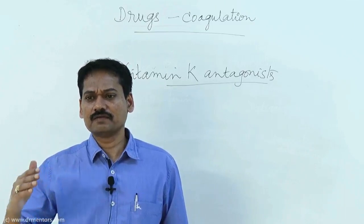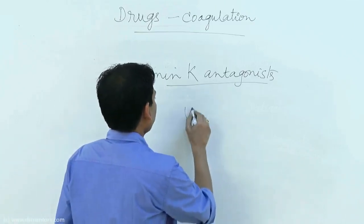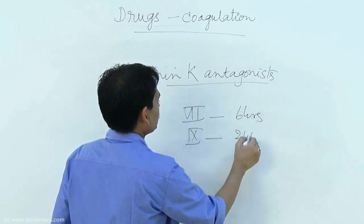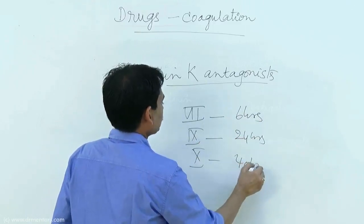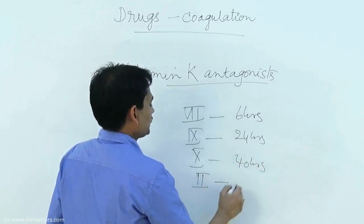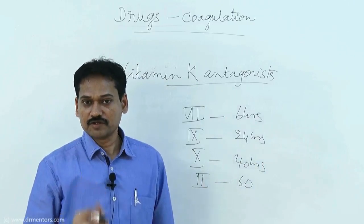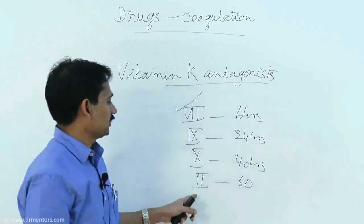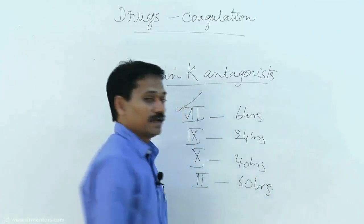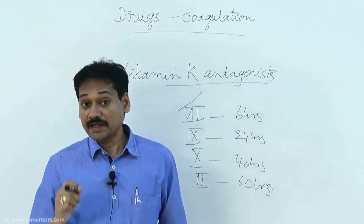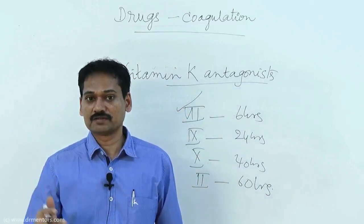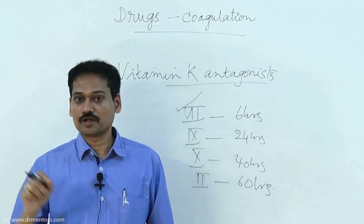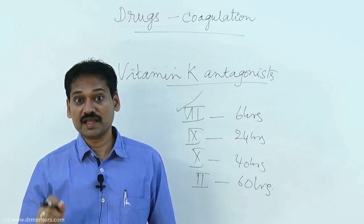Different clotting factors have different half-lives: factor 7 has a half-life of 6 hours, factor 9 has 24 hours, factor 10 has 40 hours, and factor 2 (prothrombin) has 60 hours. When warfarin is administered, the first factor to disappear is factor 7 and the last is prothrombin.